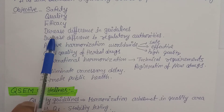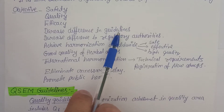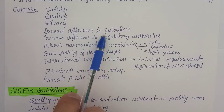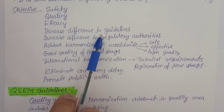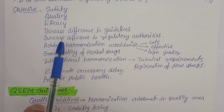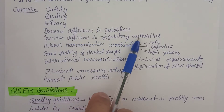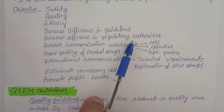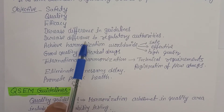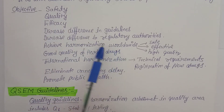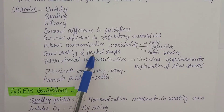Another objective is to decrease differences in guidelines at both international and national levels. Guidelines should have sufficient similarities to fulfill public health needs worldwide. It should also decrease differences among regulatory authorities — whether Asian, European, or others — which currently have many differences in their rules, regulations, and procedures.